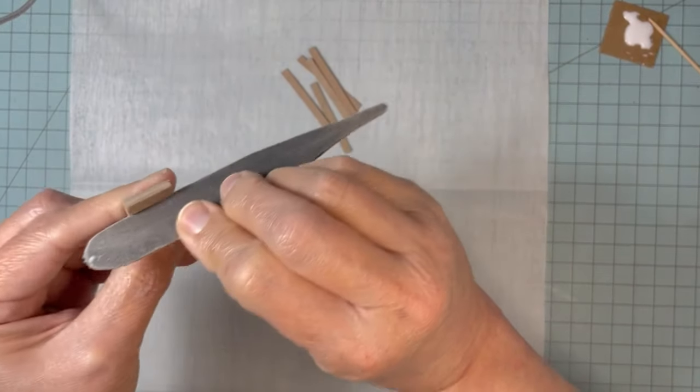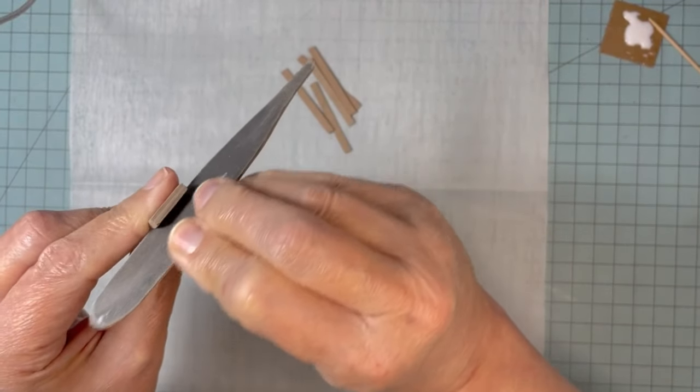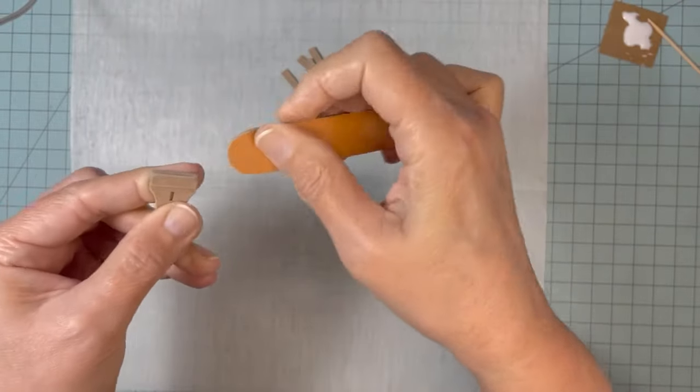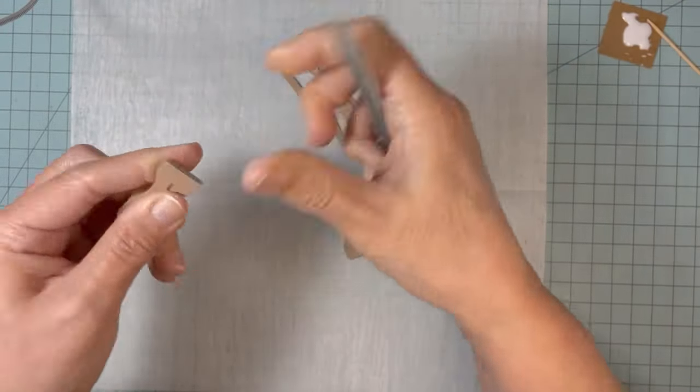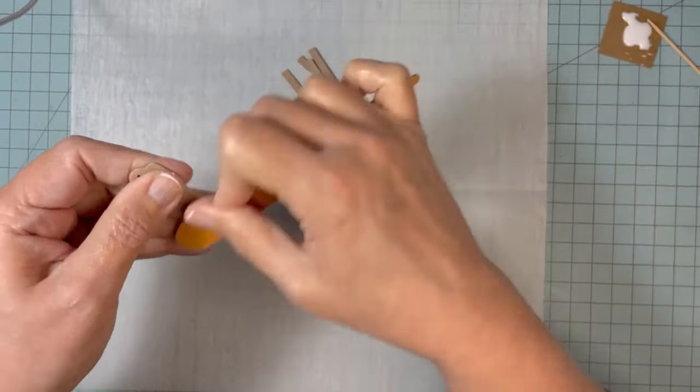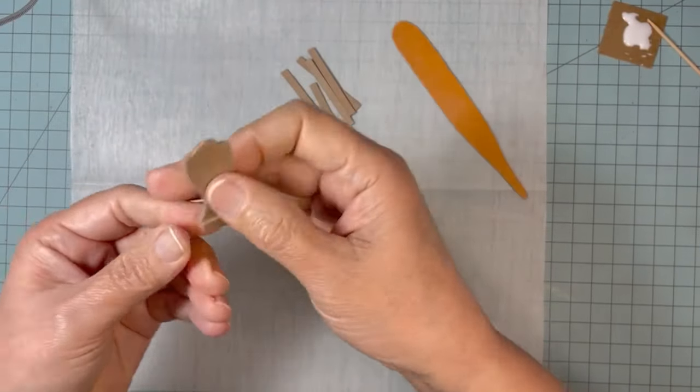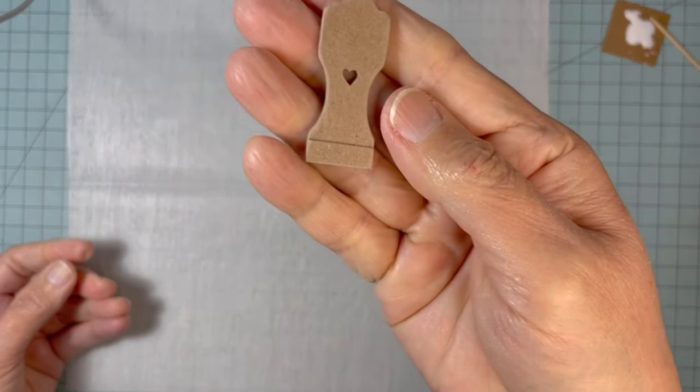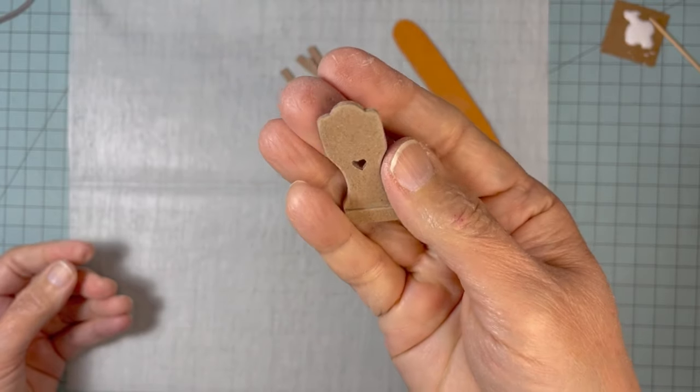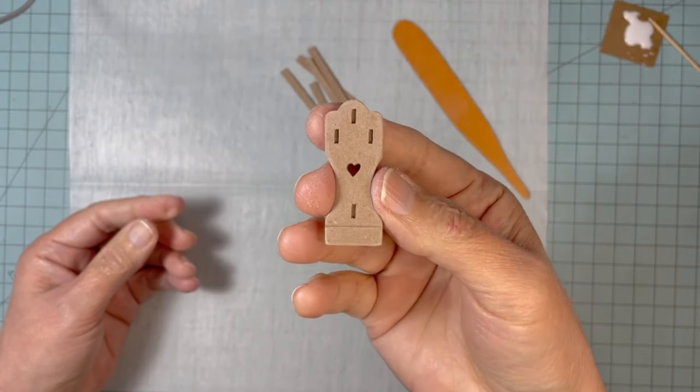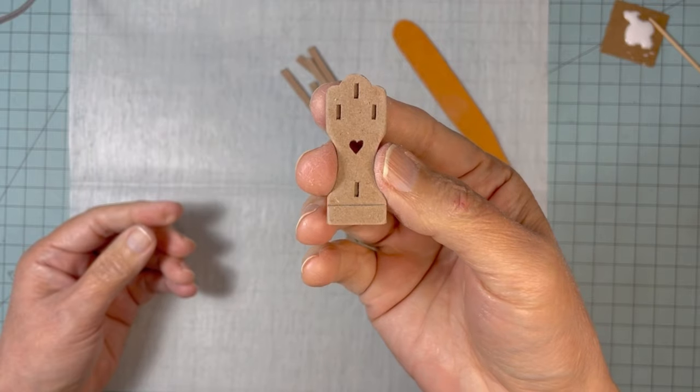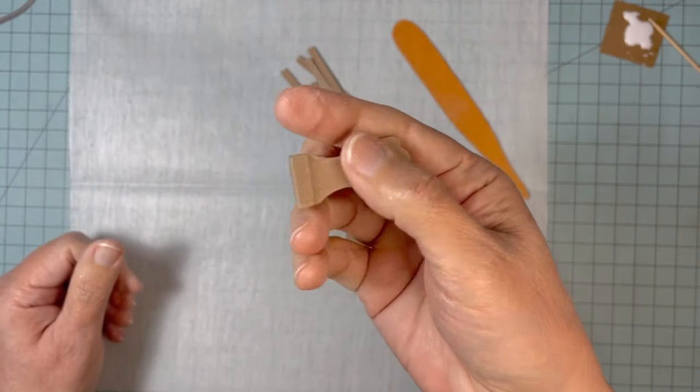And here I'm just sanding all of the rough edges, just softening everything. Every time I do a voiceover and I talk about the sanding, it reminds me of one of my earlier videos. I actually said sharpen the edges instead of sand the edges. I don't know why, but that just makes me laugh. I'm so glad I caught that mistake.